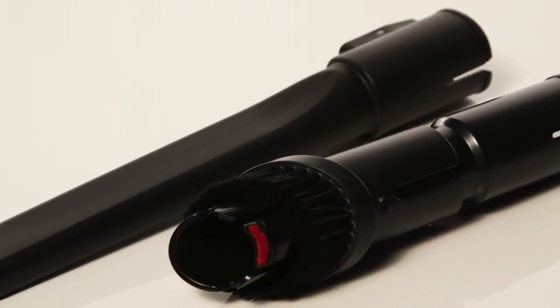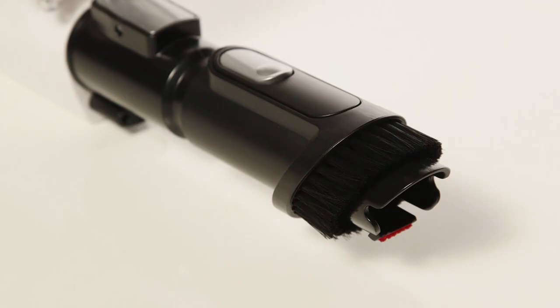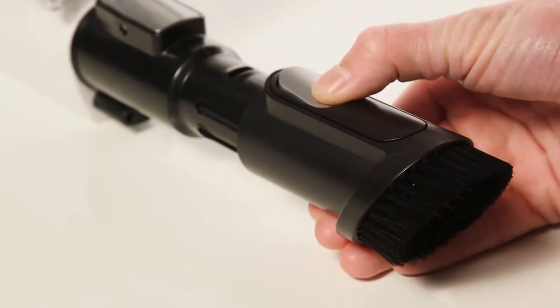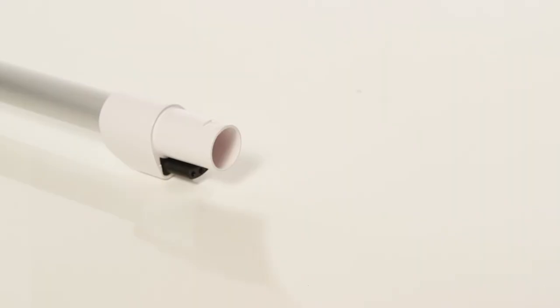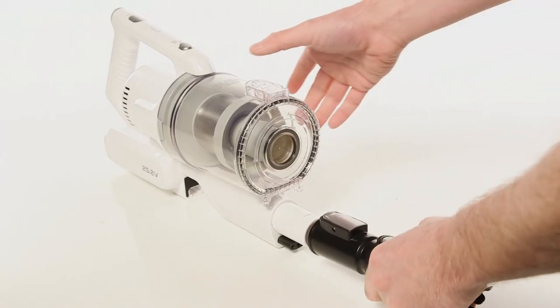Also included with your cordless vacuum are a crevice nozzle and a combination nozzle that has a brush fitted. Slide these attachments either onto your extension tube or onto the main body of the vacuum.